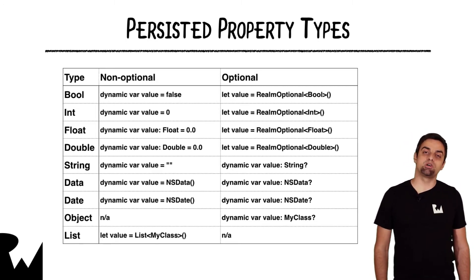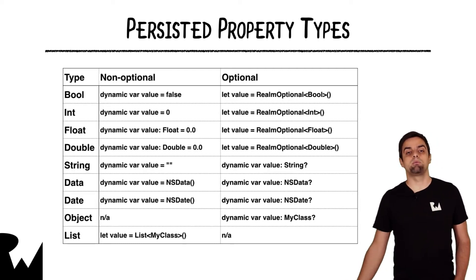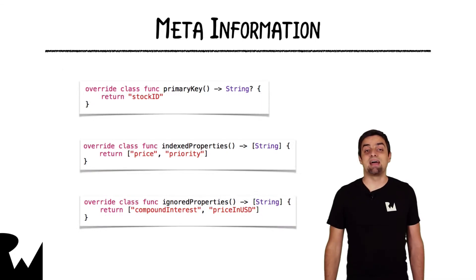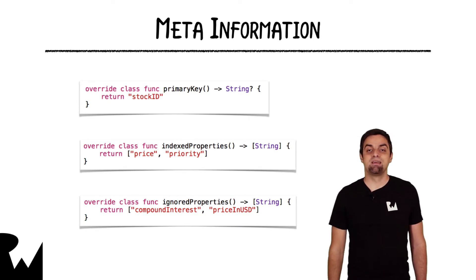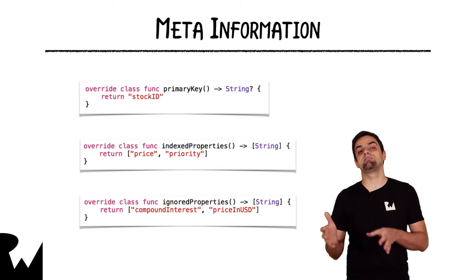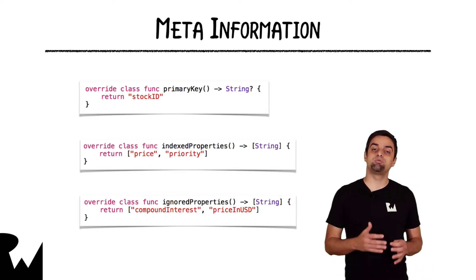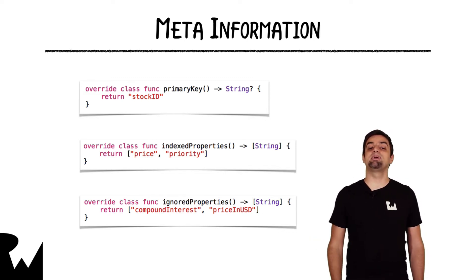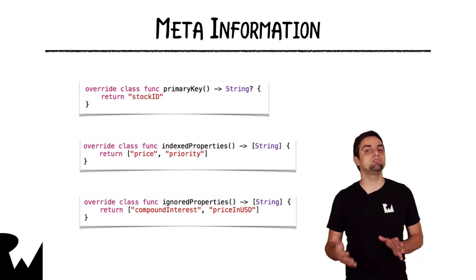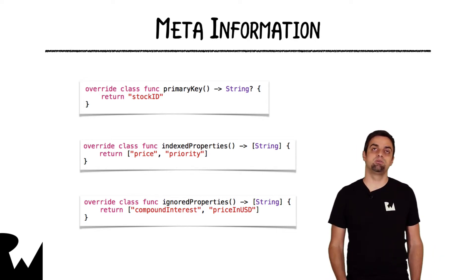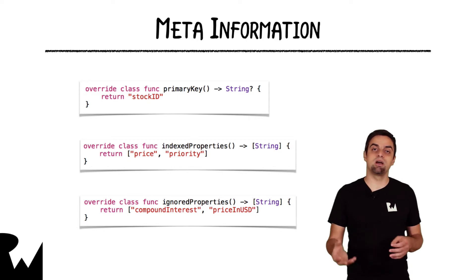You can also have properties which are other Realm objects or lists of other Realm objects, and Realm will automatically persist and maintain those relationships on disk. Your model classes can provide some meta information to Realm. For example, you can override the primaryKey method to specify which class property is the primary unique key. Override indexedProperties to specify additional properties that need to be indexed for faster searches. And override ignoredProperties to tell Realm that certain properties in your class don't need to be persisted on disk.